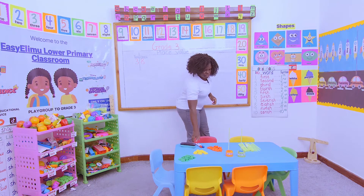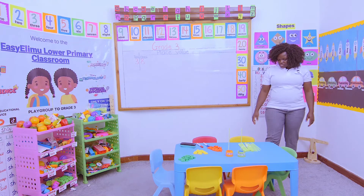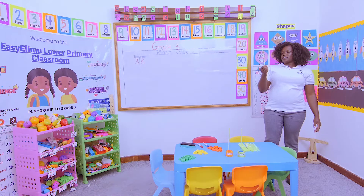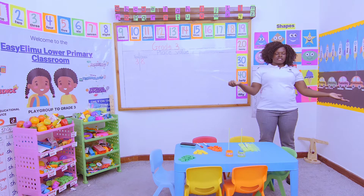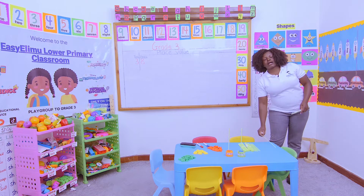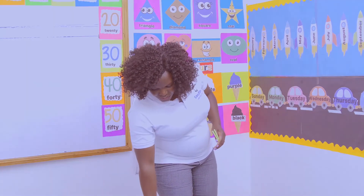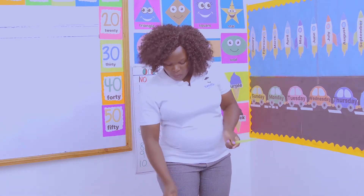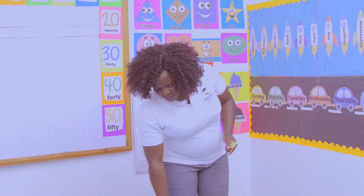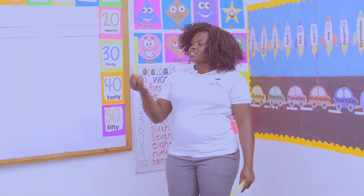So if I'm told to show the place value of that number using the bundles of sticks, we said when I have one stick like this, this is a 1. It doesn't have any other name, it is just 1. When they are 2, they become 2 ones. When they are 3, they are 3 ones. When they are 4, they are 4 ones. When they are 5, they become 5 ones.